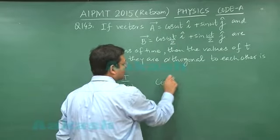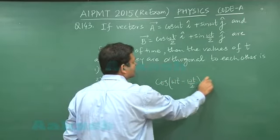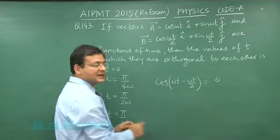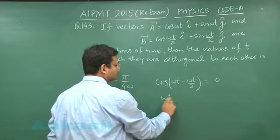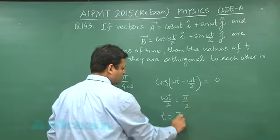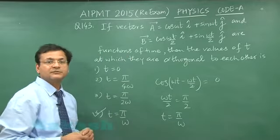Ultimately you will be getting here cos omega t minus omega t by 2, and it should be zero. That means the thing which is there in the bracket should be pi by 2. And then ultimately t will be obtained as pi by omega. So I will be marking answer 4 for this particular straightforward question.